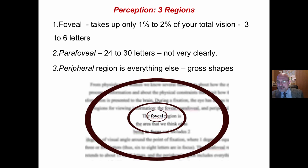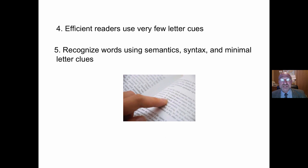What does that tell us? We can't perceive every letter. We get minimal letter cues. We get kind of cues in the para-foveal, and our brain fills in the blanks. Efficient readers use very few letter cues. We want to teach children to read the way efficient readers read.